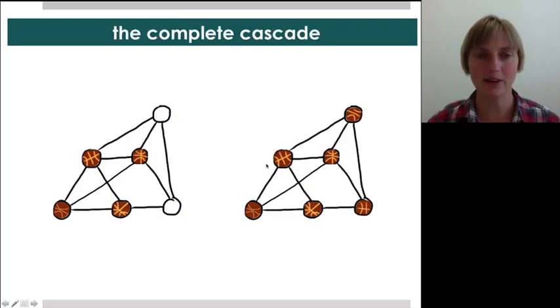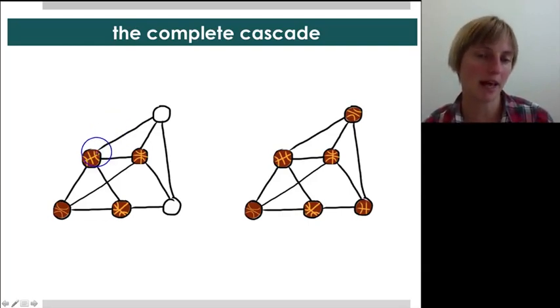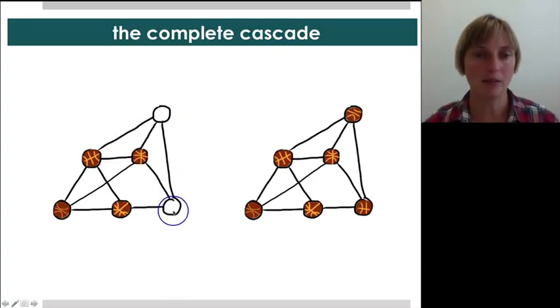Okay, hopefully you figured out that it was B who would switch next, because it was looking at its four neighbors, two of whom had switched. Versus at that point, if you exclude B, A was looking at three neighbors, only one of which had switched to basketball, and so that's one-third, which is less than two-fifths, so it wasn't sufficient to flip. C was in a symmetric situation. But now, that B has flipped, both A and C also find it favorable to switch to basketball.